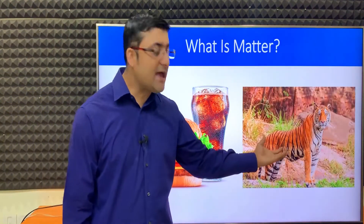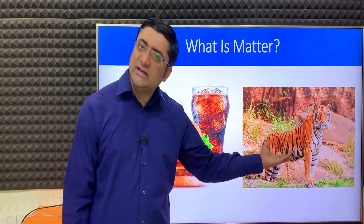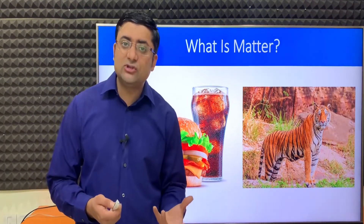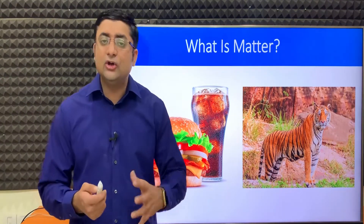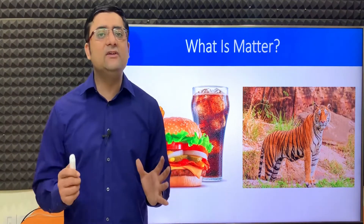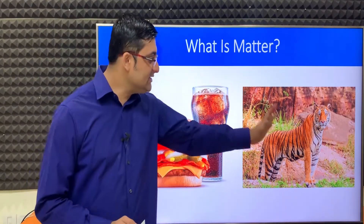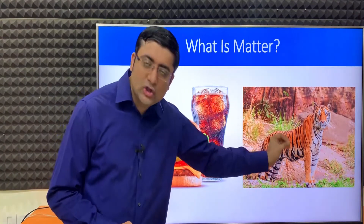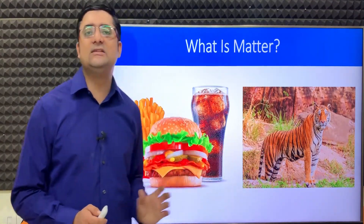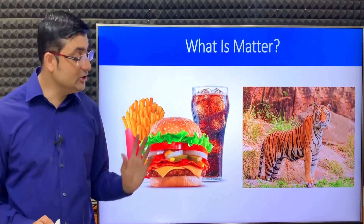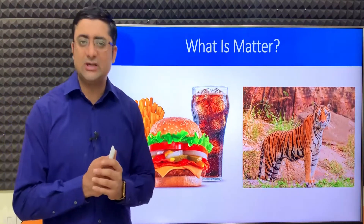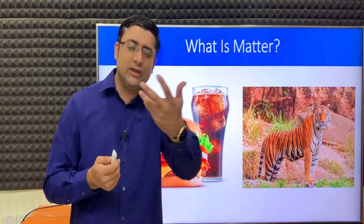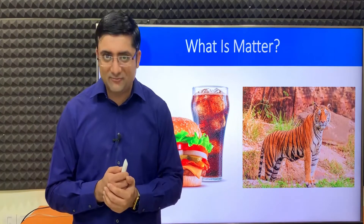Similarly, this tiger over here — is this matter? Yes. A lot of kids have this confusion: are living things also matter? Yes, they are. Both non-living and living things are matter. As long as anything — living or non-living — occupies space and has mass, it is an example of matter. Pretty much everything you see around you, including you and me, we are all examples of matter.